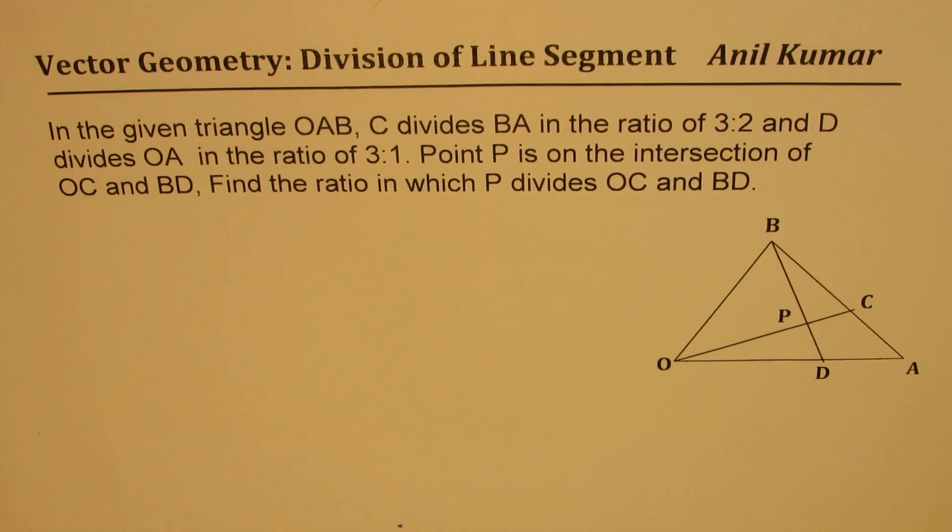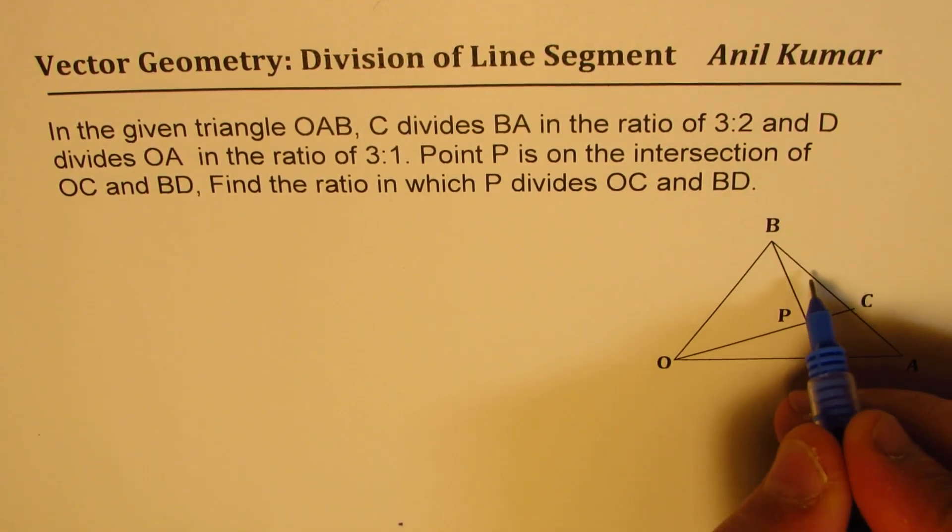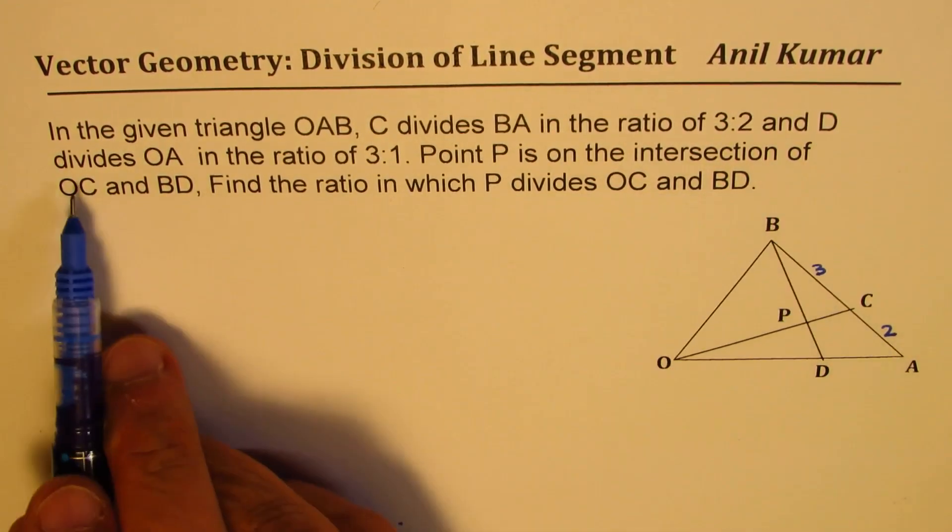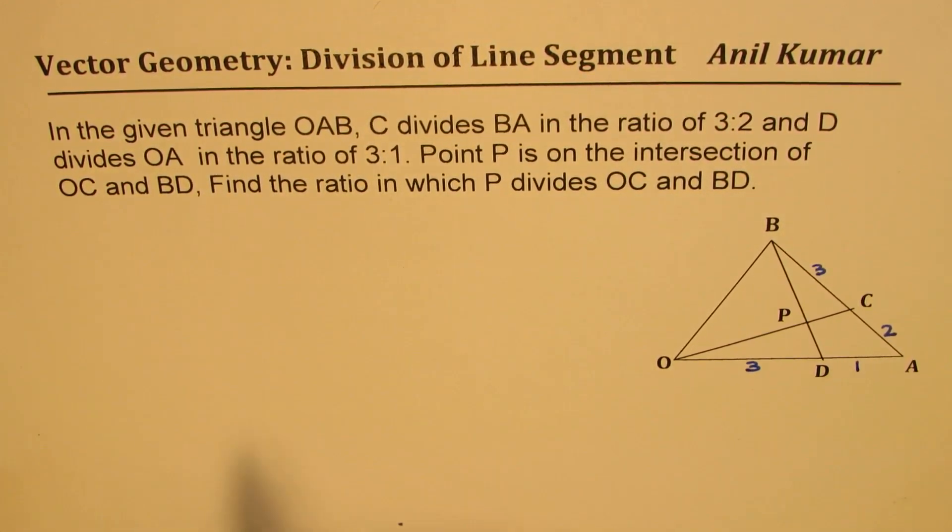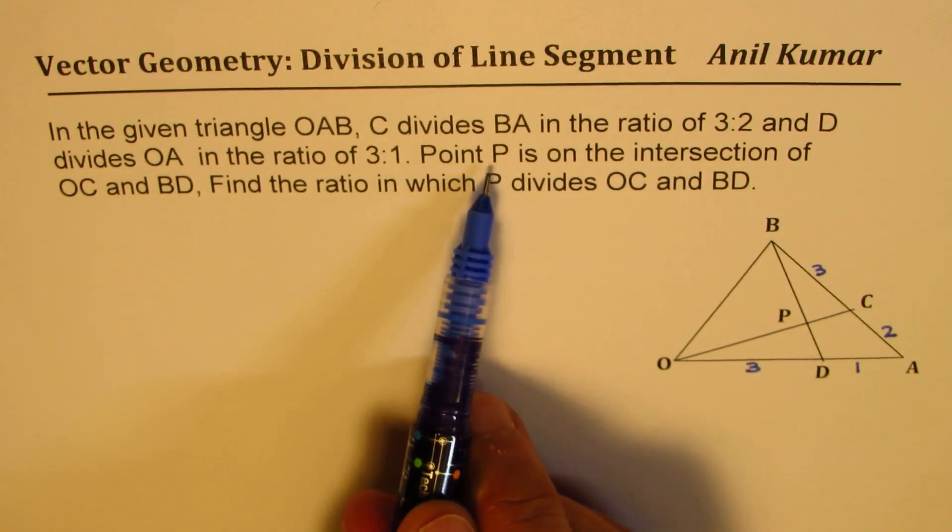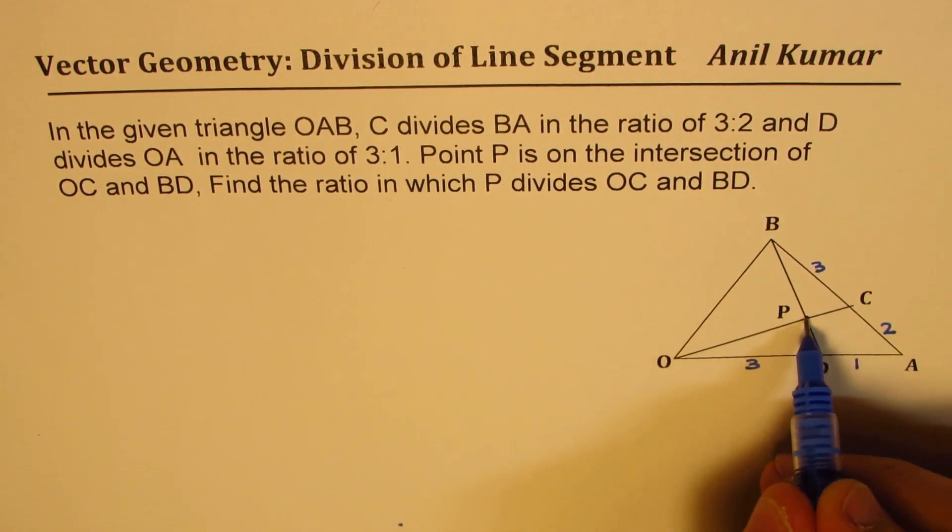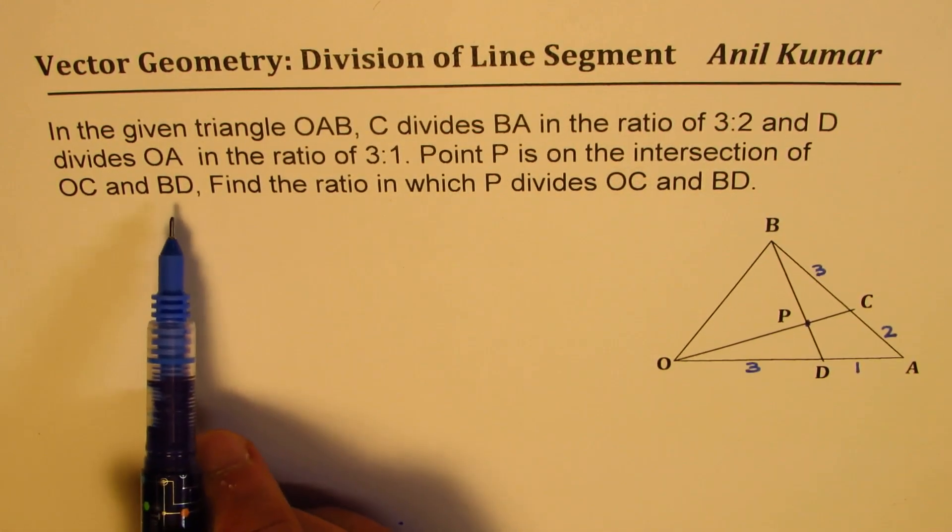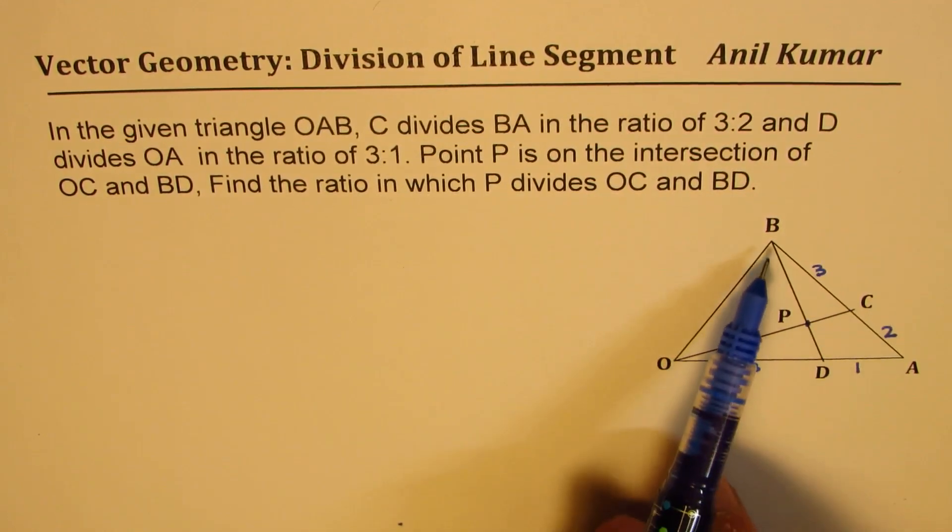The question here is, in the given triangle OAB, C divides BA in the ratio of 3:2, so this is 3, this is 2. And D divides OA in the ratio of 3:1, so this is 3 and this is 1. Point P is on the intersection of OC and BD. Find the ratio in which P divides OC and BD.